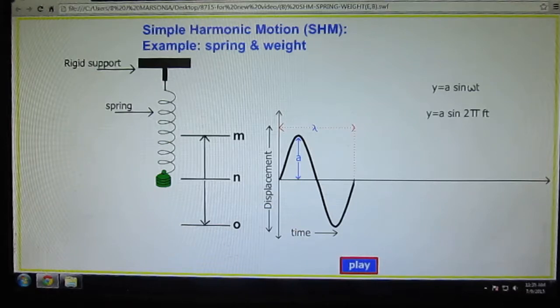Let me tell you the definition of simple harmonic motion. Simple harmonic motion is a motion in which the acceleration of the body is directly proportional to its displacement from a fixed point and is always directed towards the fixed point.